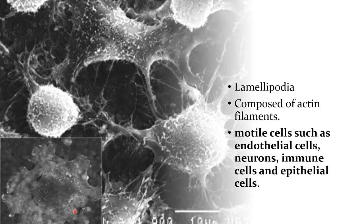When you view motile cells such as endothelial cells, neurons, immune cells, and epithelial cells under an electron microscope, you can notice thin projections from their outer membrane. These thin projections are called lamellipodia, and they are composed of actin microfilaments. They are just projections from the outer surface of the cell with no organelles inside, because they are composed solely of actin microfilaments.